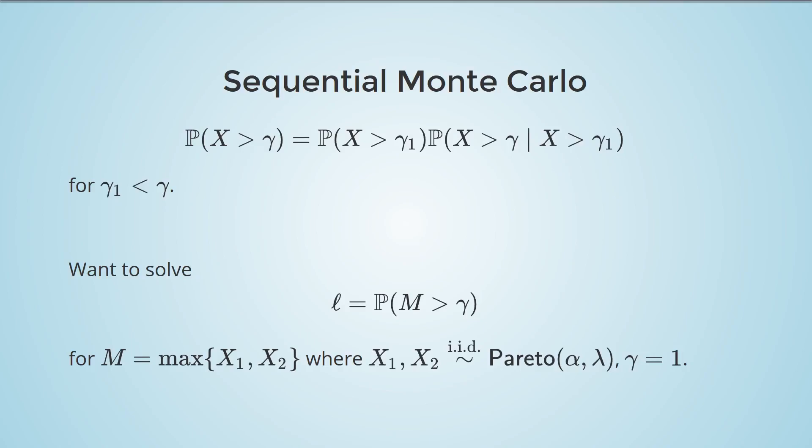Luckily for rare event estimation, it all boils down to this identity. The probability that X is greater than gamma is the probability that X is greater than gamma1 times the probability that X is greater than gamma, conditioned on being greater than gamma1, where gamma1 is smaller than gamma.